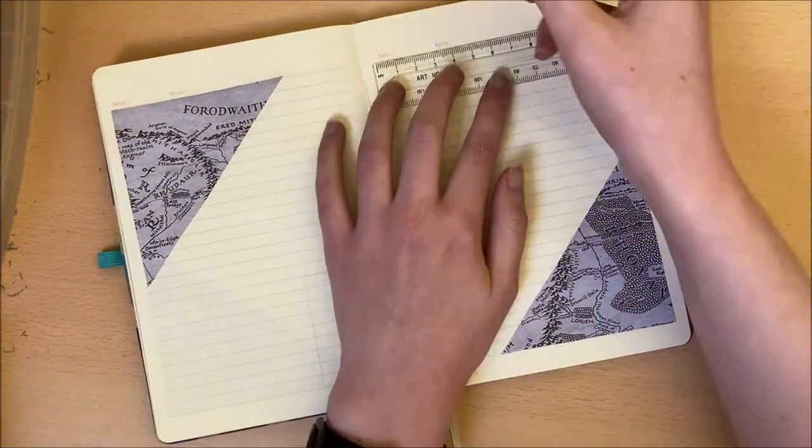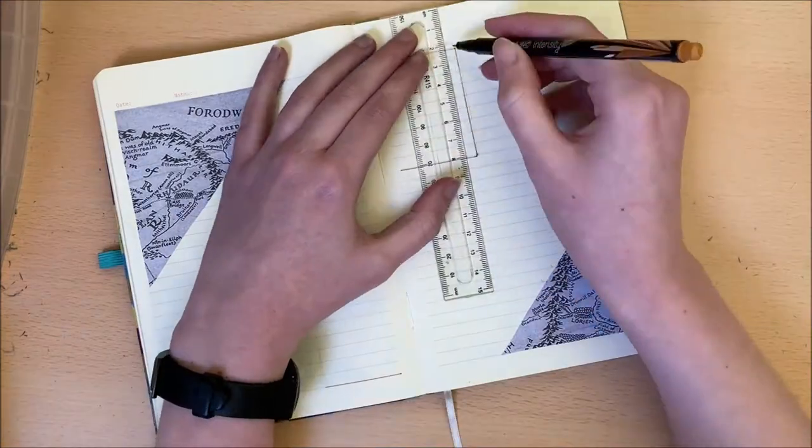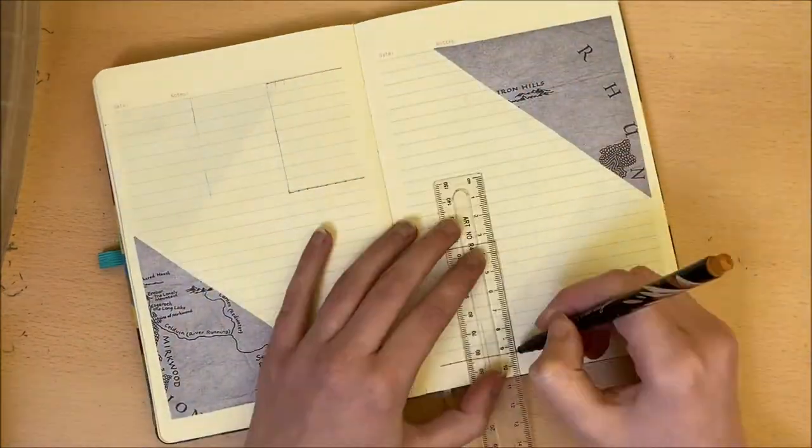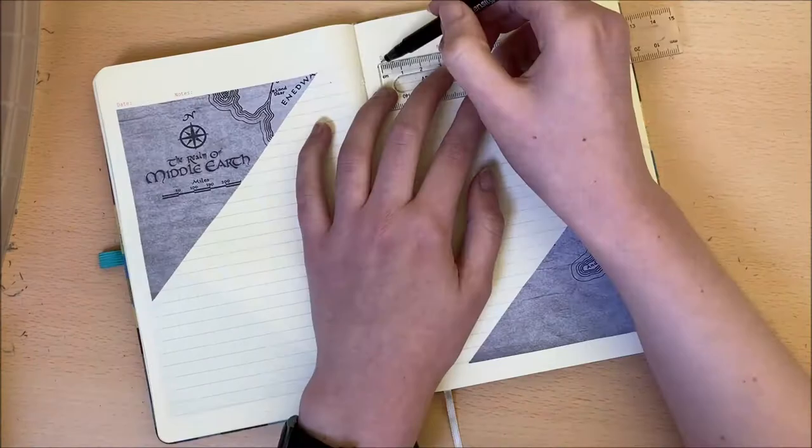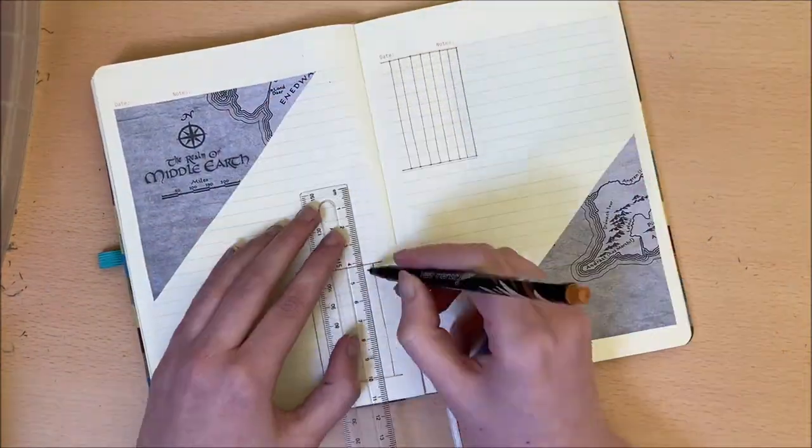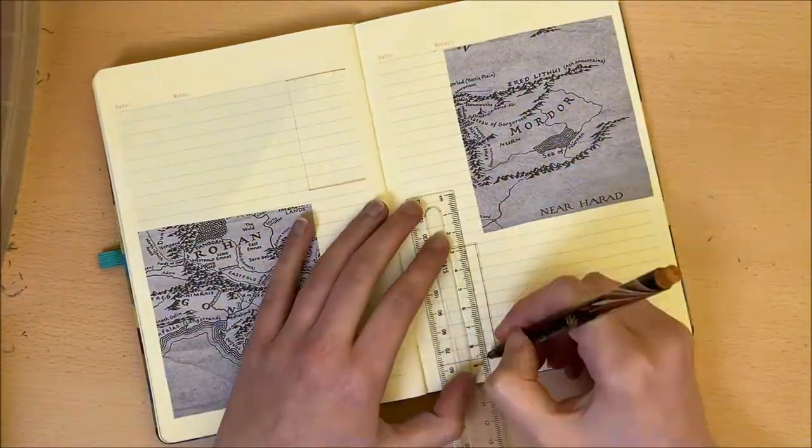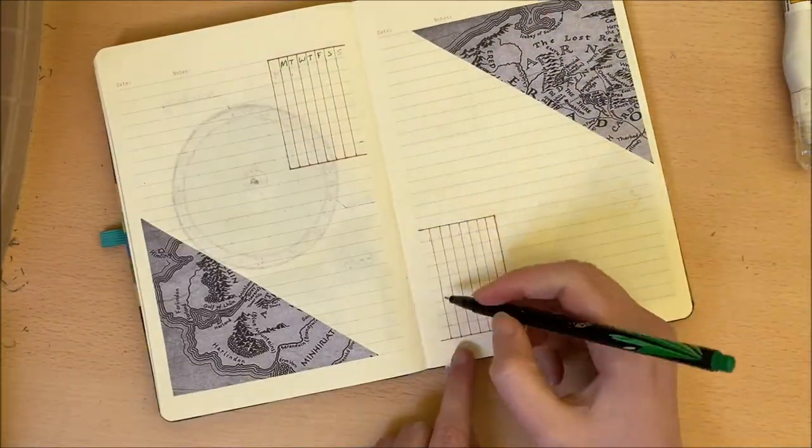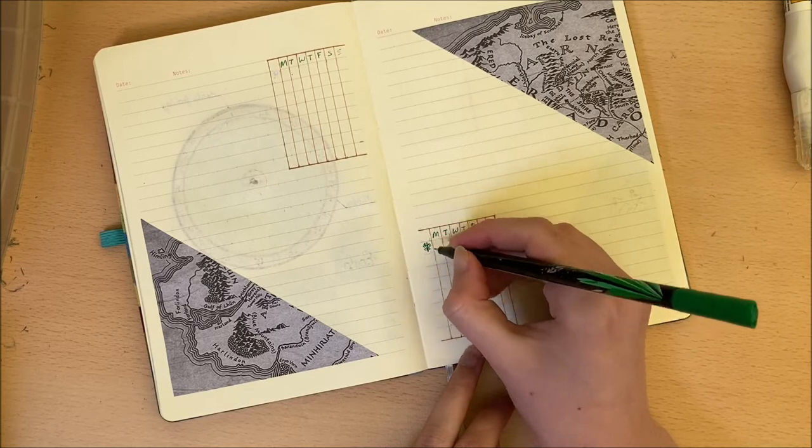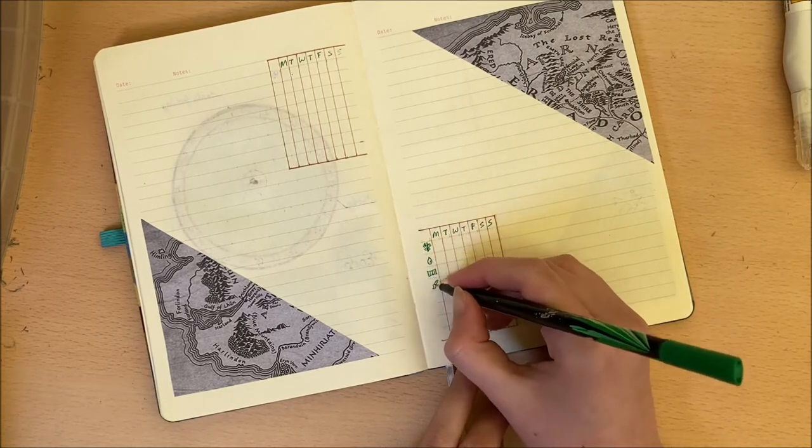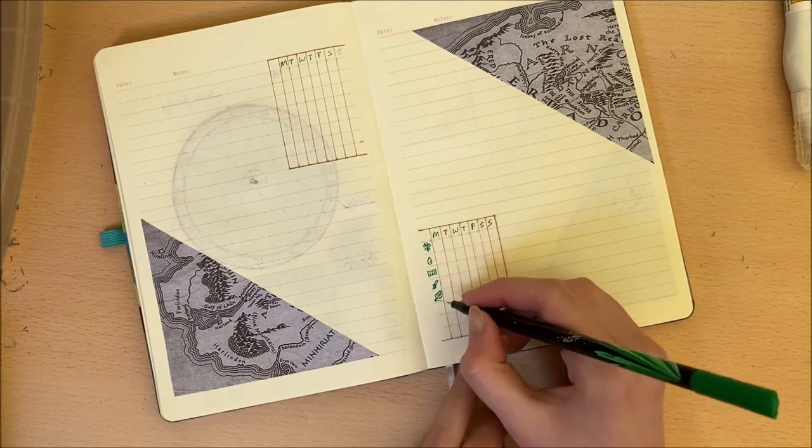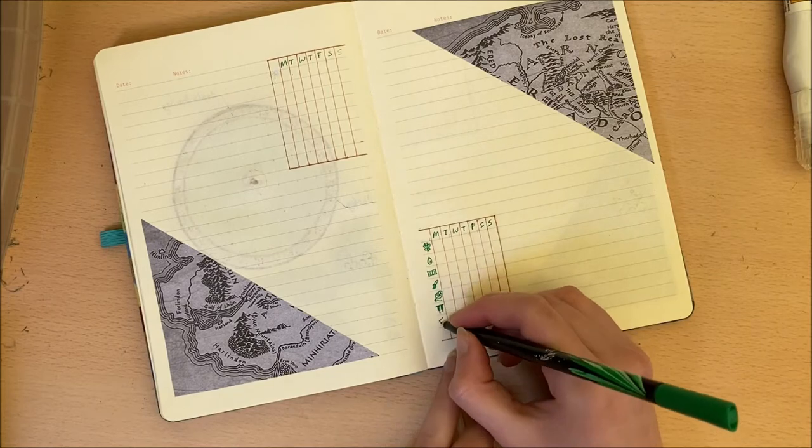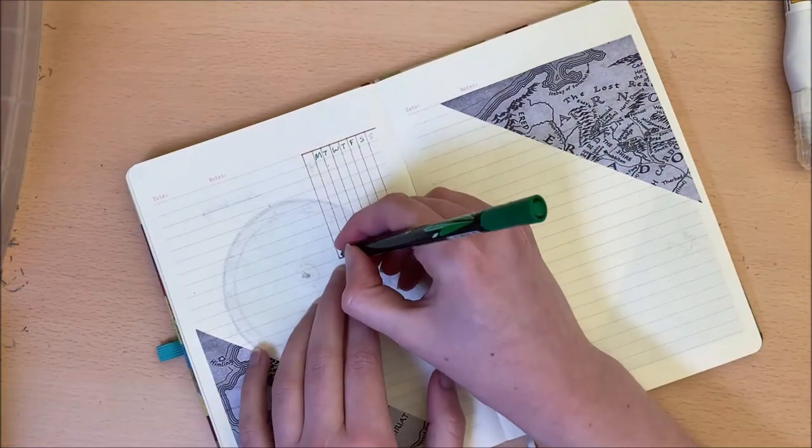So one of these grids are going to be used as my habit tracker, while the other will be used as a day-to-day schedule, since my days for the next few weeks are a bit all over the place. Eight boxes across gives me enough space to write each of the seven days, as well as having one box free in order to write in either the times of the day for my daily schedule, or else imagery that I use to keep track of habits.